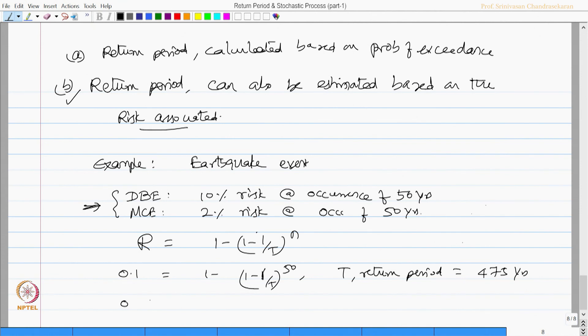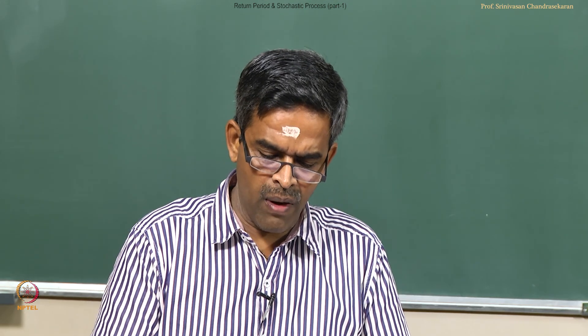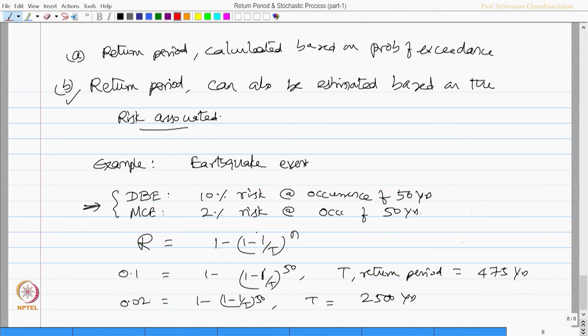Similarly, for 2 percent risk, 1 minus (1 minus 1 over t) to the power 50, which gives me t as 2500 years. So friends, this example simply illustrates depending upon the admissible risk in a given design, return period can be as close or as far away as 2500 years.